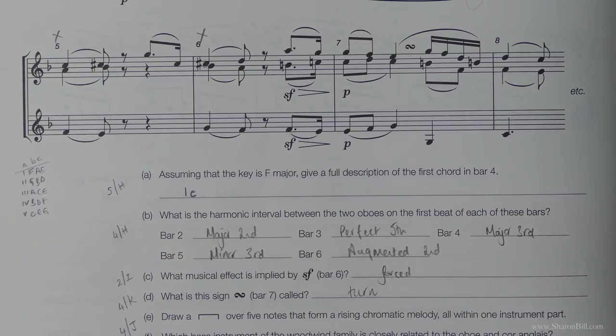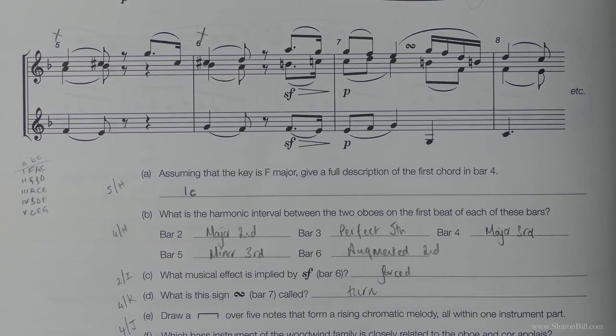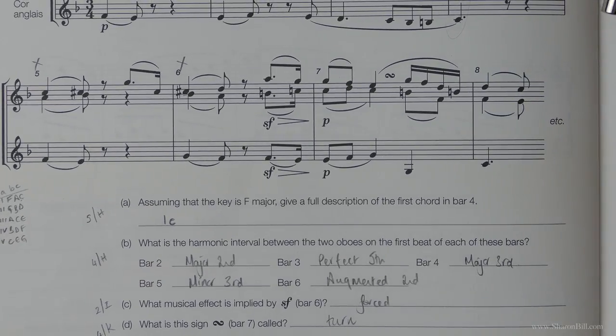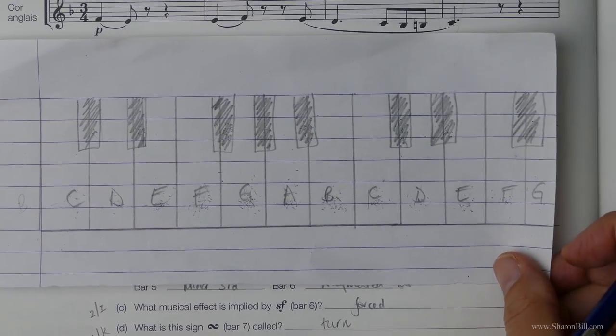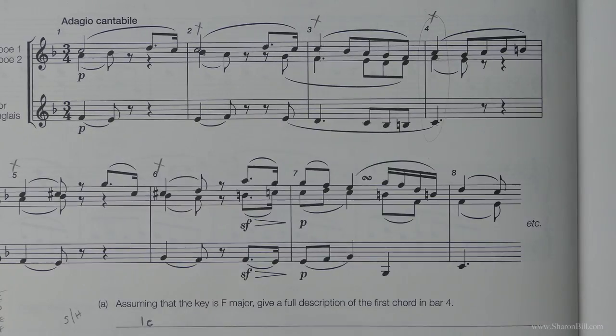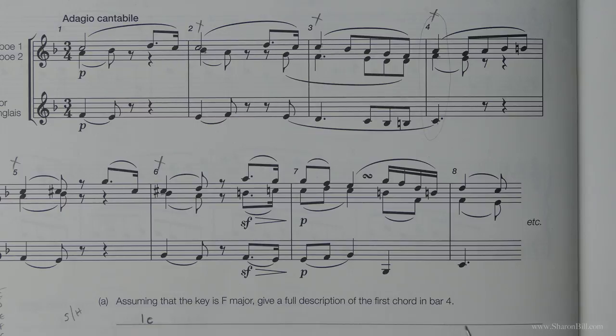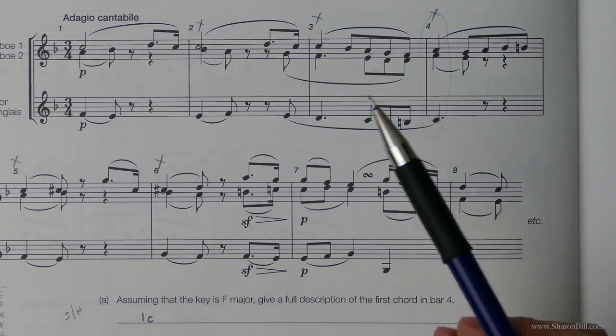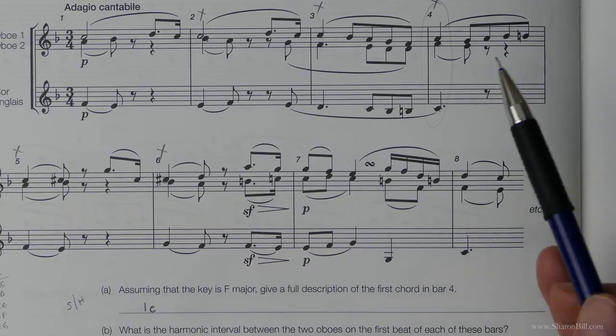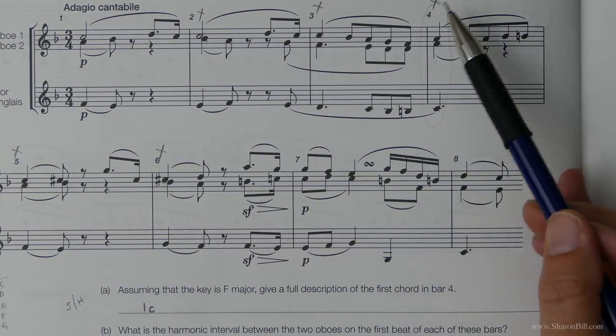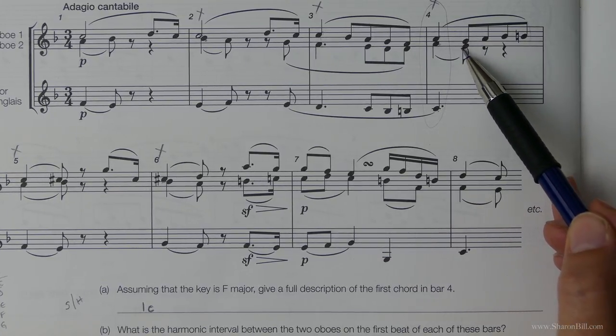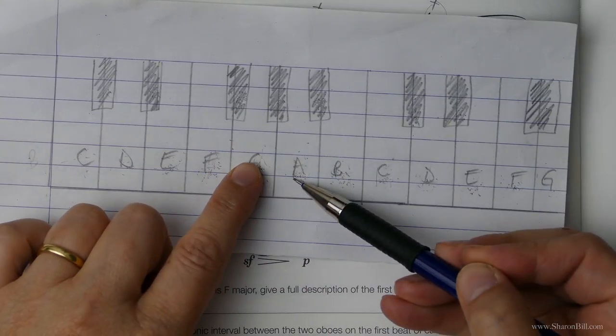Now then a bit of detective work for this next one. We need to find 5 notes that form a rising chromatic melody. You might find it helpful to have your piano keyboard here to visualise. So the first job is to look ahead and just find a group of notes that rise in step. And the only time that you get 5 notes or anything like that rising in step is here. And so you first look at this and you think well G to A is not chromatic so that won't do.